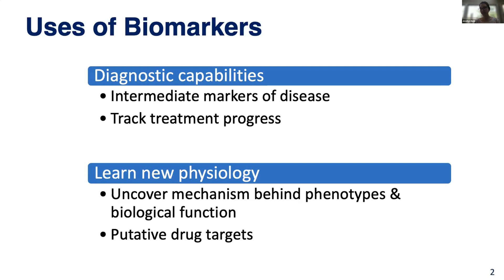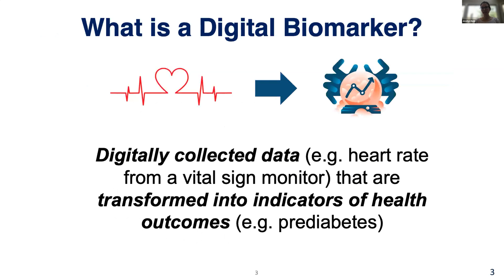When I talk about a digital biomarker, I'm talking about the same context of the use of a biomarker, but using data that's collected from a sensor. Specifically, a digital biomarker is digitally collected data — for example, heart rate from a vital sign monitor, or using photoplethysmography — where we transform that continuous signal into an indicator of health outcomes, such as a chronic disease like prediabetes, or a more acute disease like a respiratory infection.